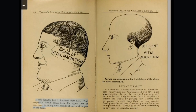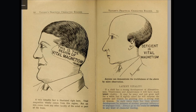A very valuable fact is illustrated right here — vital magnetism wholly comes from this region, not from any other faculty of the mind or part of the brain. Latent vitality. If a child has a strong development of alimentiveness, vitativeness, and amativeness, it will have much latent vitality. It may be puny and not grow well for a while, but if rightly cared for will surprise the parents and friends by growing into a strong man or woman. In such cases there has been arrested development by sickness of mother, prenatal influences, or improper food. Always go to the brain for certainty in any kind of character reading.